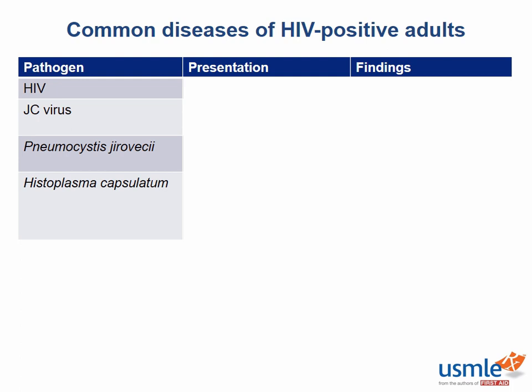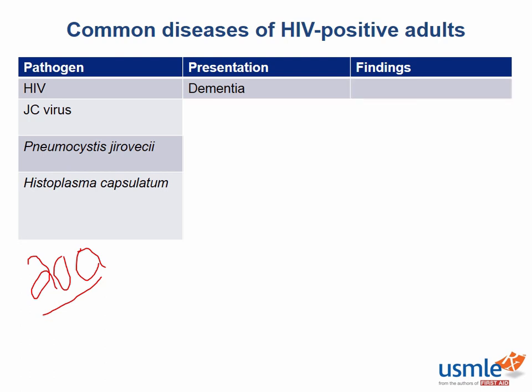The HIV virus does cause AIDS, but it is a virus that can also infect other cells in addition to the CD4 cell. Once the immunity wanes to less than 200 CD4 cells per millimeter cubed, the HIV virus can, unfortunately, cause pretty significant dementia. This dementia is chronic, slowly develops, it's insidious, but it can be quickly devastating.